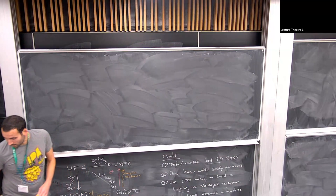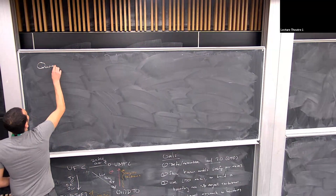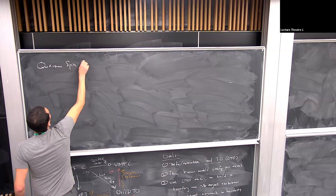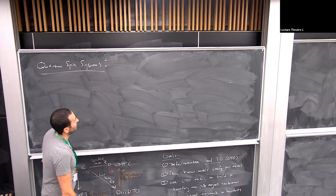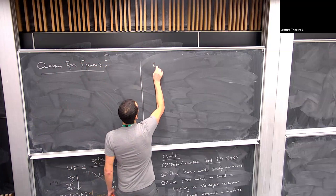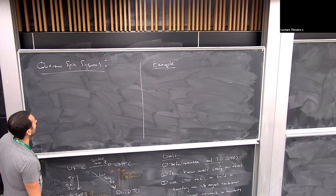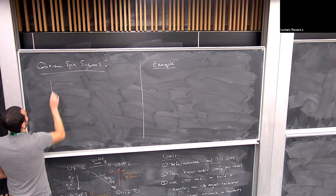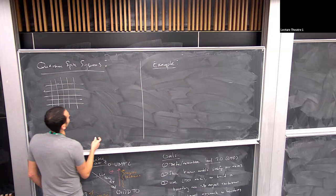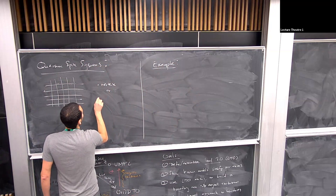Let's start with quantum spin systems. Everything will be in parallel — I'll give definitions and examples simultaneously over the next few boards. For us, a quantum spin system is defined on a lattice, which we think of as either a vertex lattice or an edge lattice.